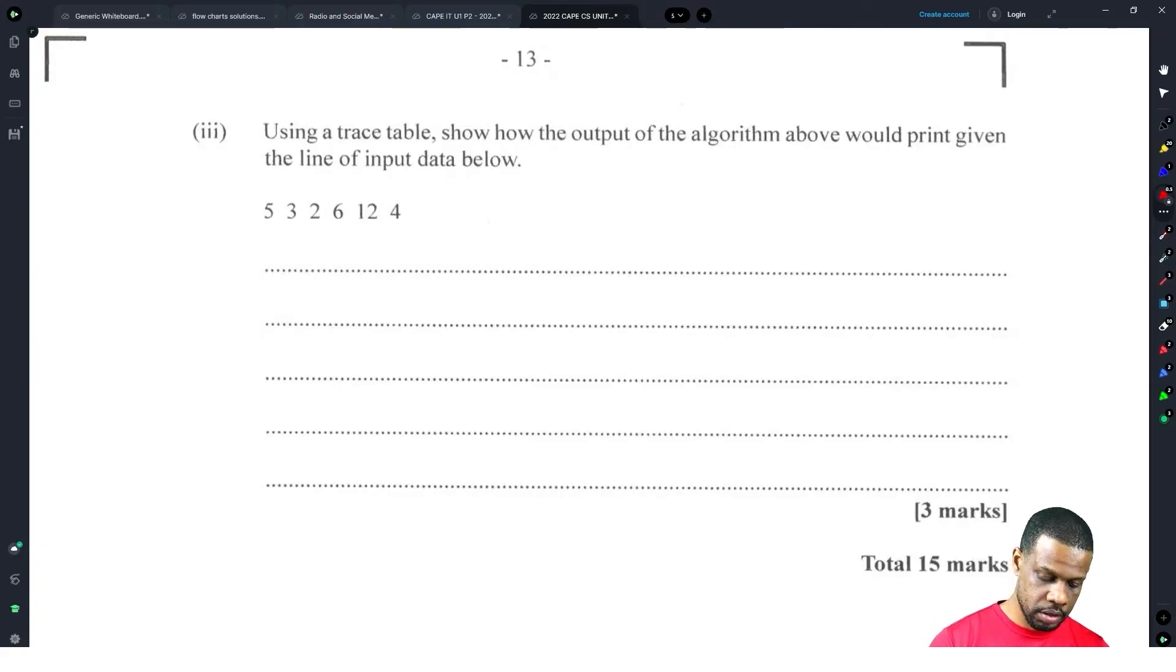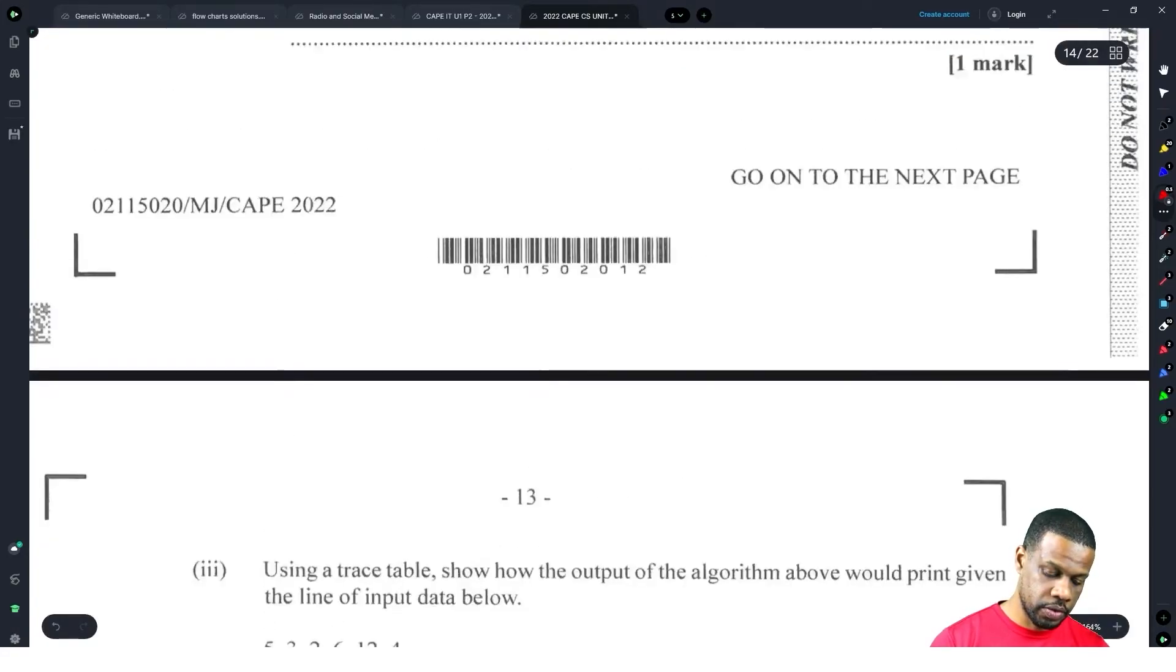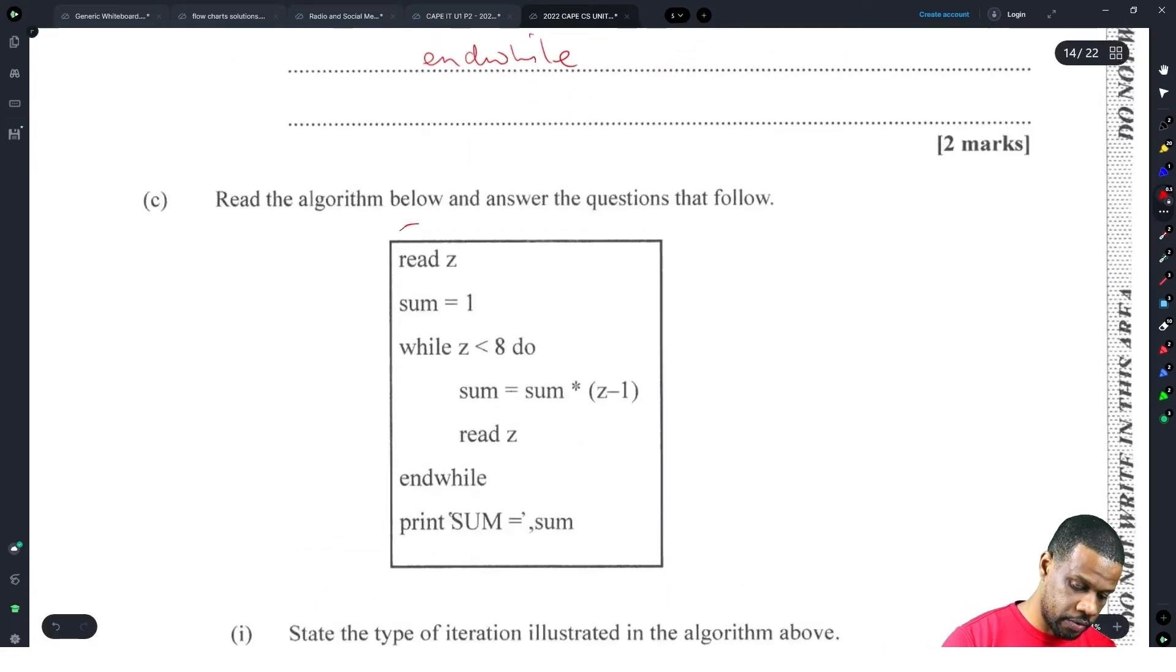Alright, that is key there. Let's go again. And then using a trace table, show the output of the algorithm above given the input five, three, two, six, twelve, four. Alright, let's go. Five, three, two, six, twelve, four. Okay, alright, so we're reading Z. So we have a Z value, we have a Z value, and then we have a sum value.